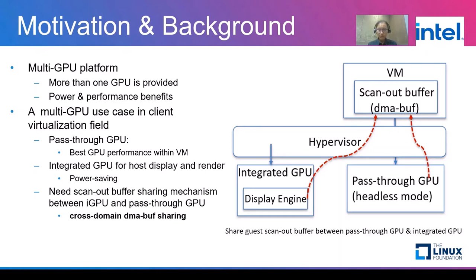Such a system can provide good power and performance benefits for users. Sharing guest scan-out buffers between the pass-through GPU and the integrated GPU is one of the key requirements. CPU copy might not be acceptable here as it impacts user experience too much, and unnecessary GPU copy isn't good for system power saving. So sharing scan-out buffers is a must, and since scan-out buffers are basically a kind of DMA-buf, a cross-domain DMA-buf sharing mechanism is needed in such a system.